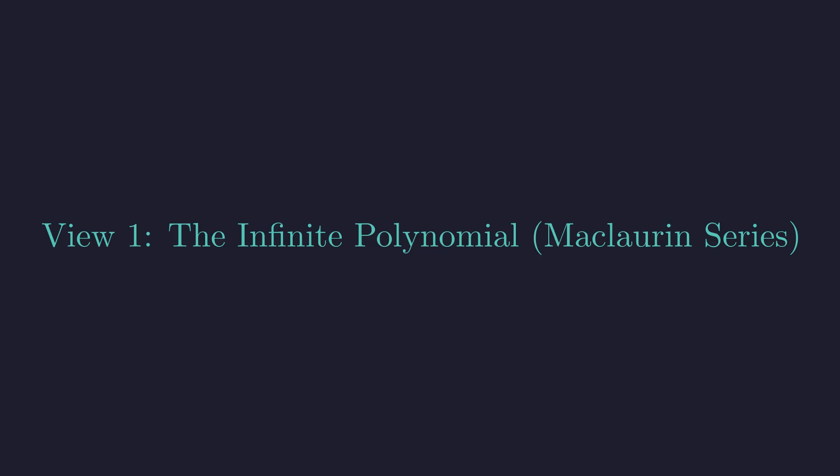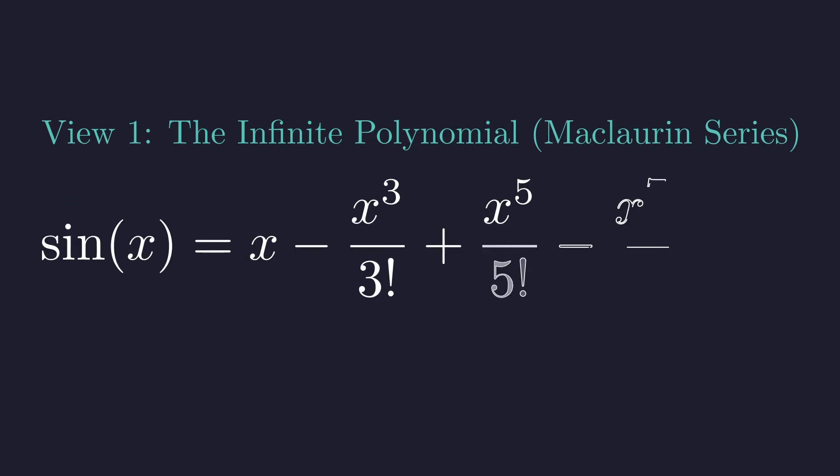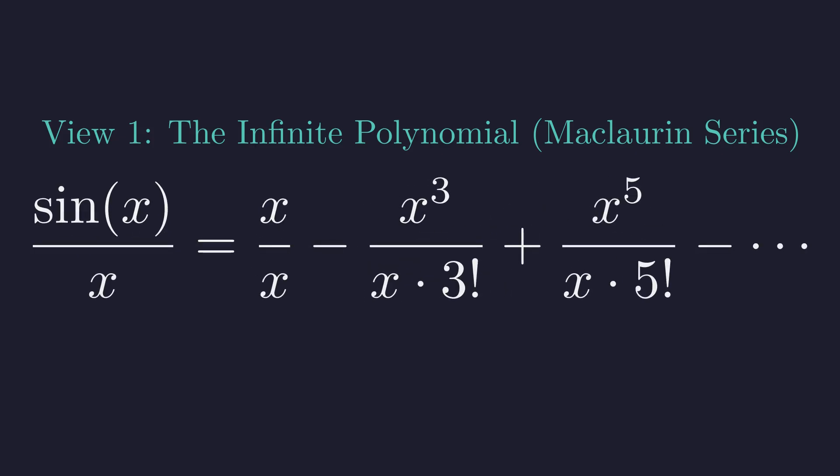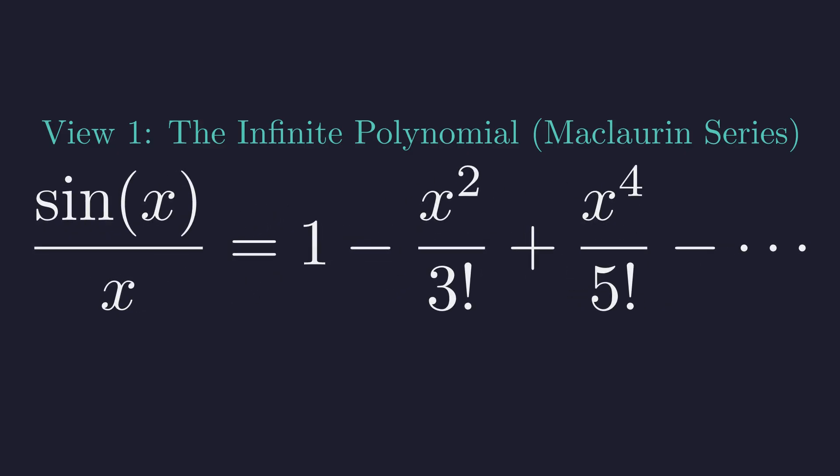The first representation comes from the Maclaurin series for sine. This expresses sine of x as an infinite polynomial. To get the function Euler needed, we divide everything by x. Dividing each term by x gives us this. So our first representation is sine x over x as a power series. Hold on to this.